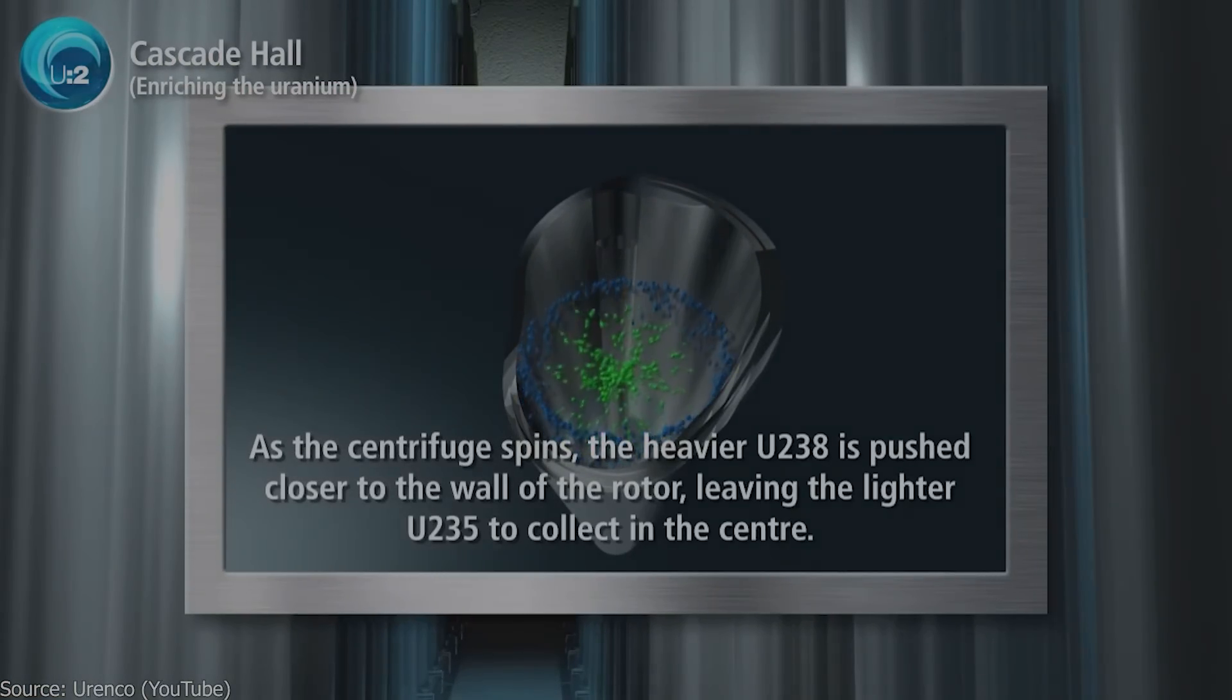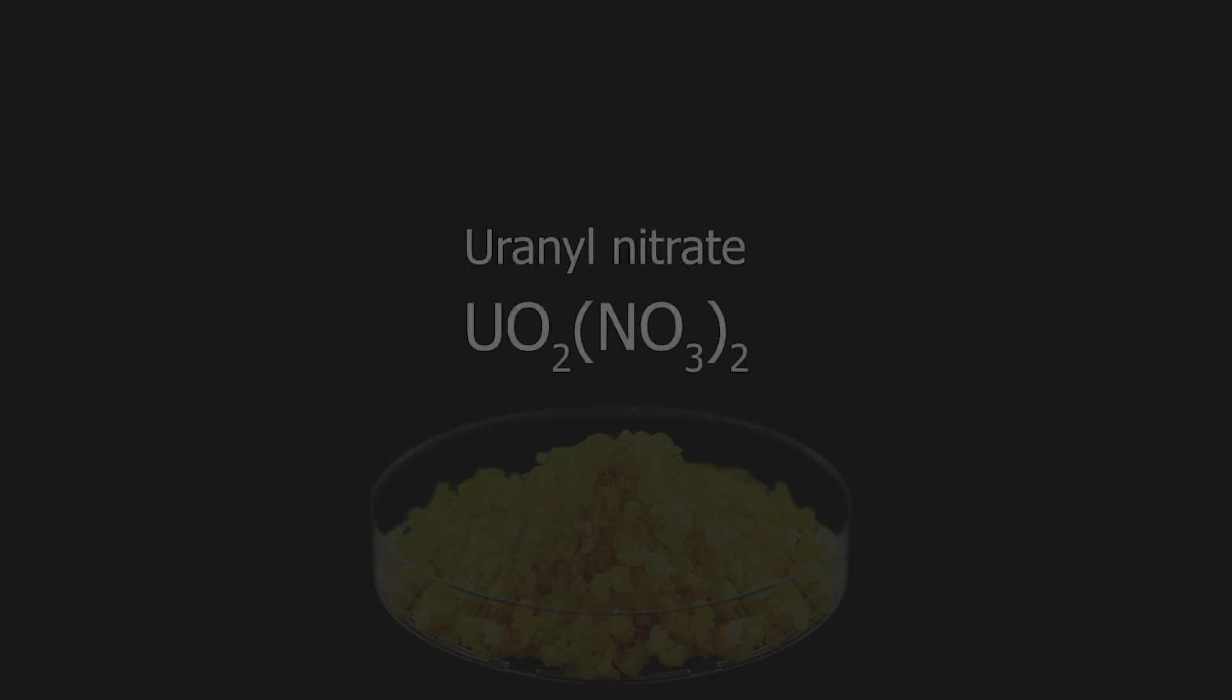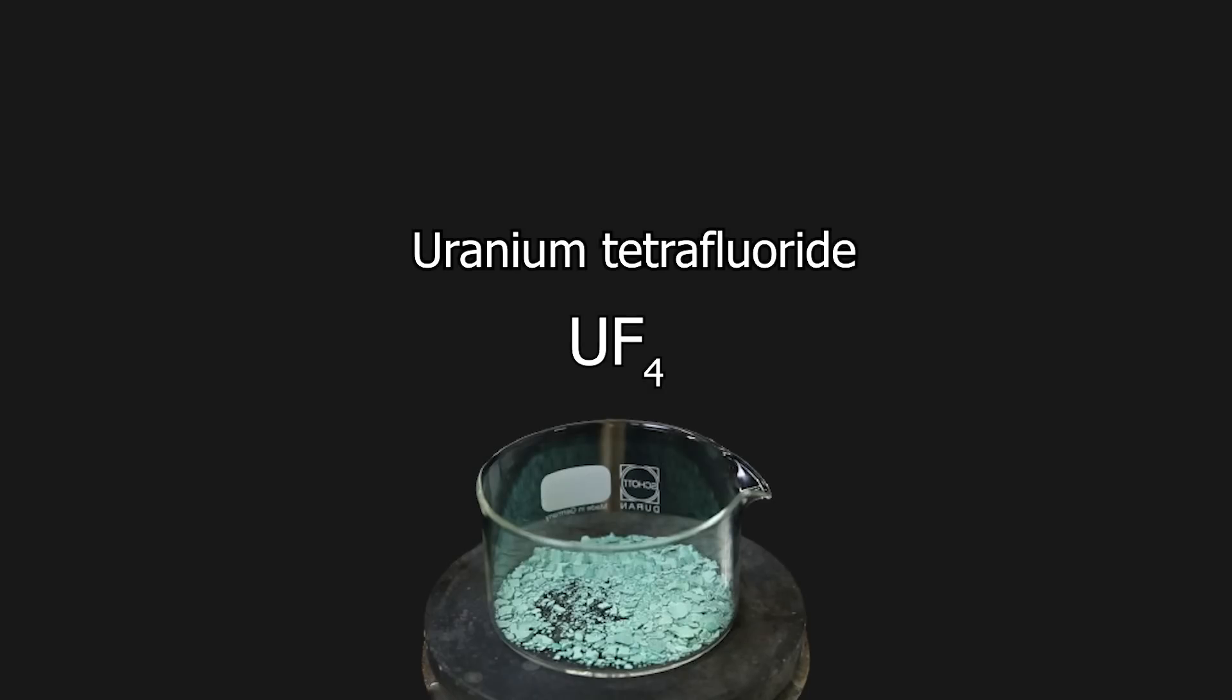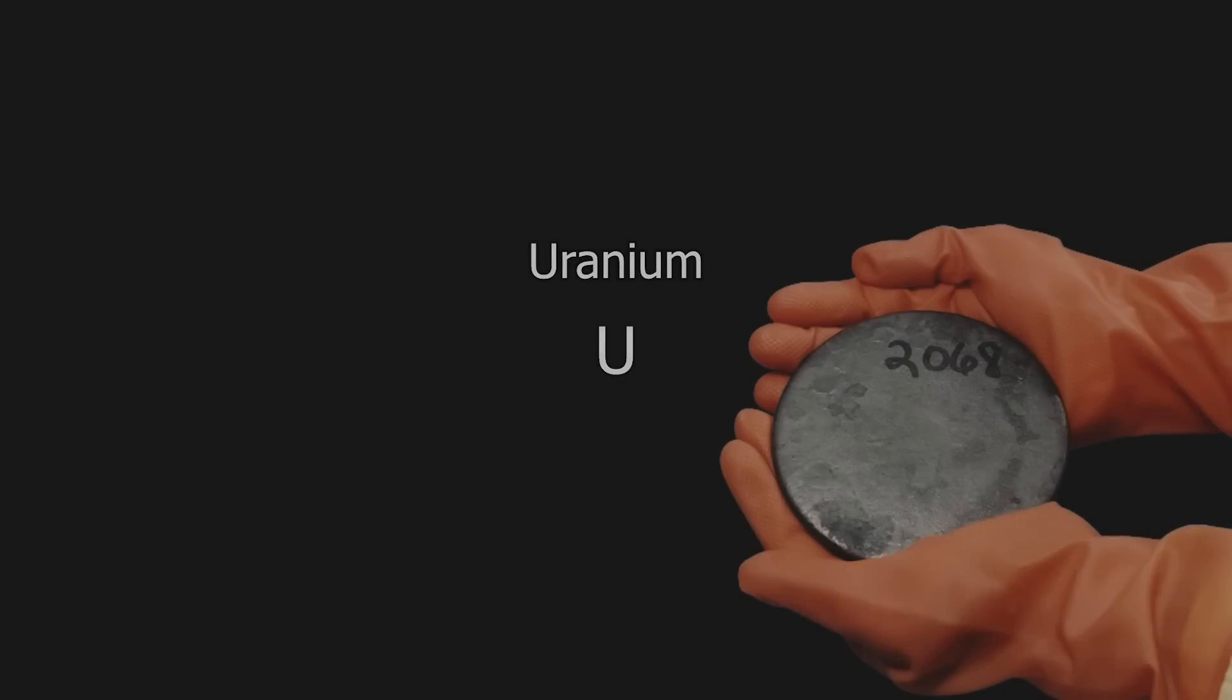I will be starting from the uranium compound uranyl nitrate, which I will convert into uranium tetrachloride, and then uranium tetrafluoride. I will then use the tetrafluoride to make uranium metal.